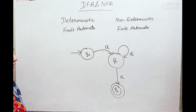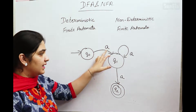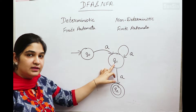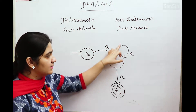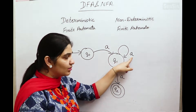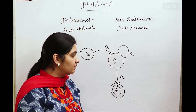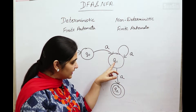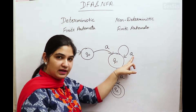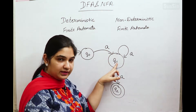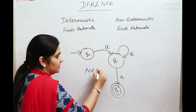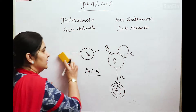Now consider another finite automata. Again, q-naught with 'a' is q1 — one particular state with a particular input alphabet gives one next state. But q1 with 'a' gives both q1 and q2. For a particular state with a particular input alphabet we have more than one next state, so the next state cannot be uniquely determined. We declare this finite automata as an NFA — a Non-Deterministic Finite Automata.